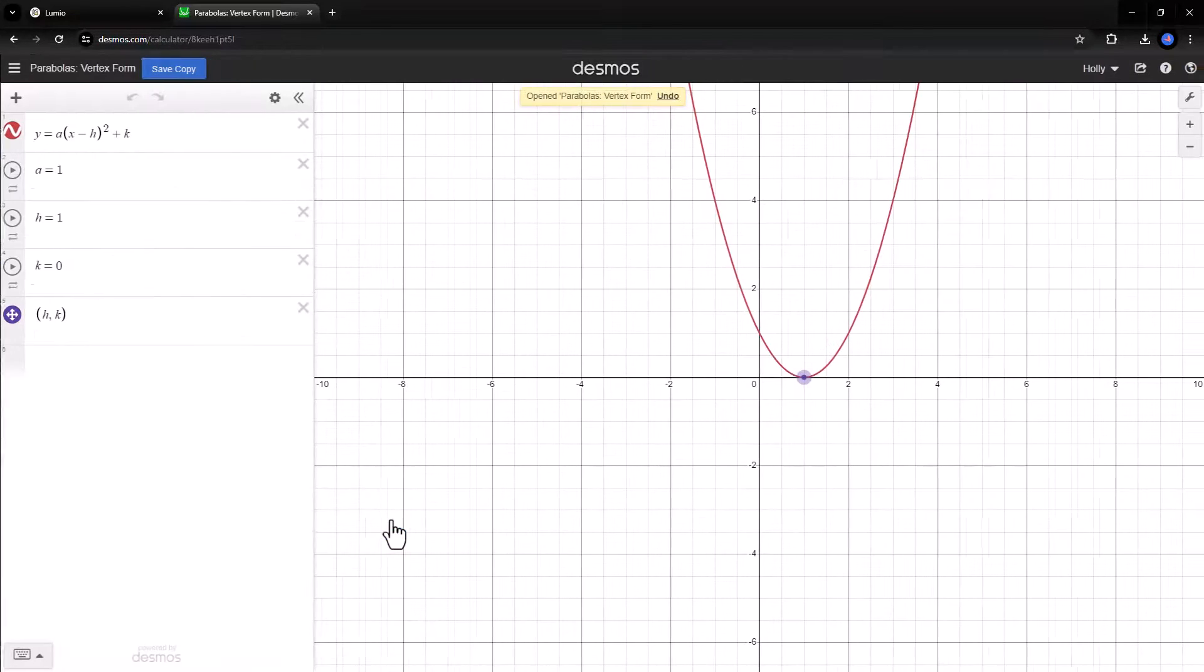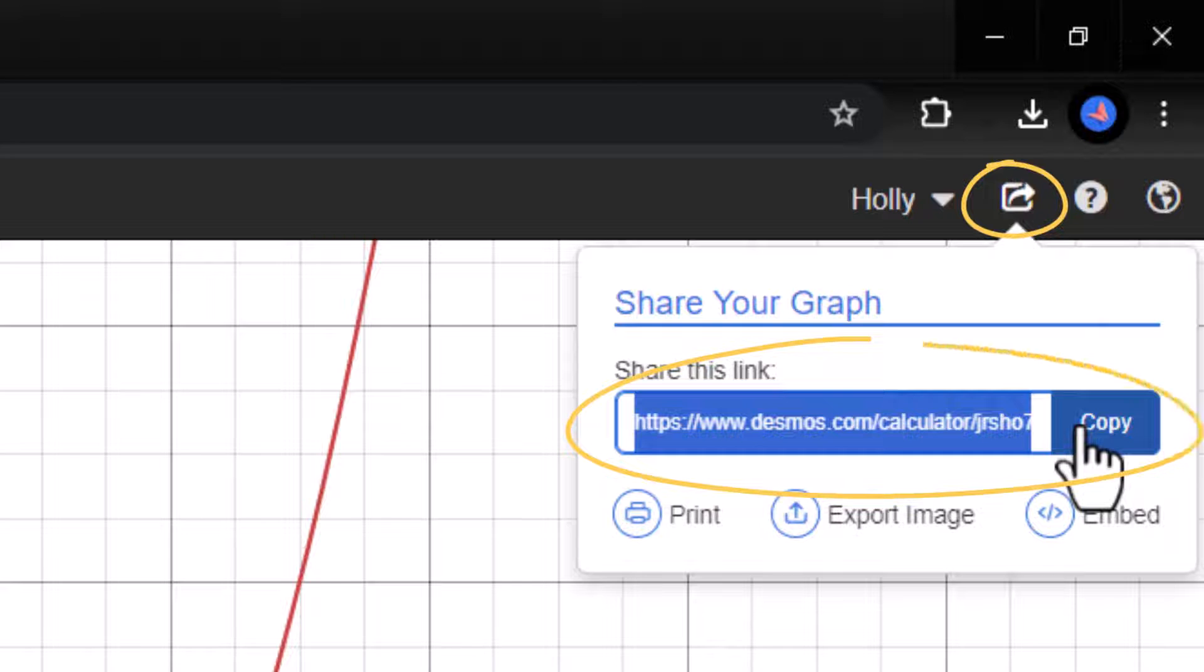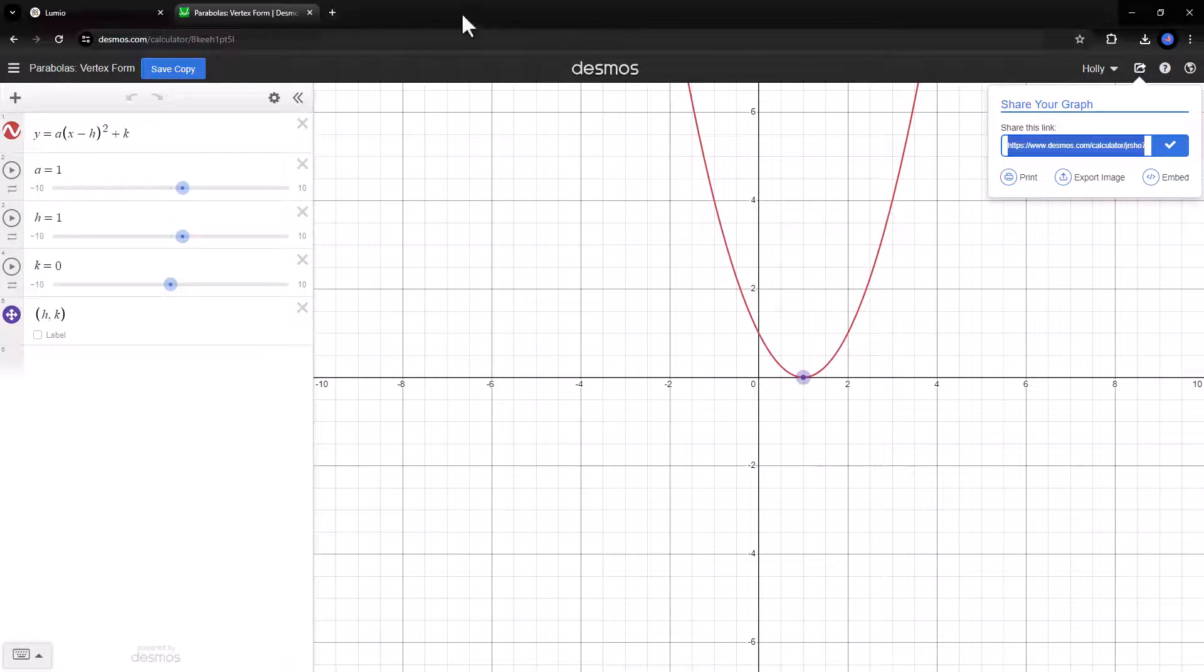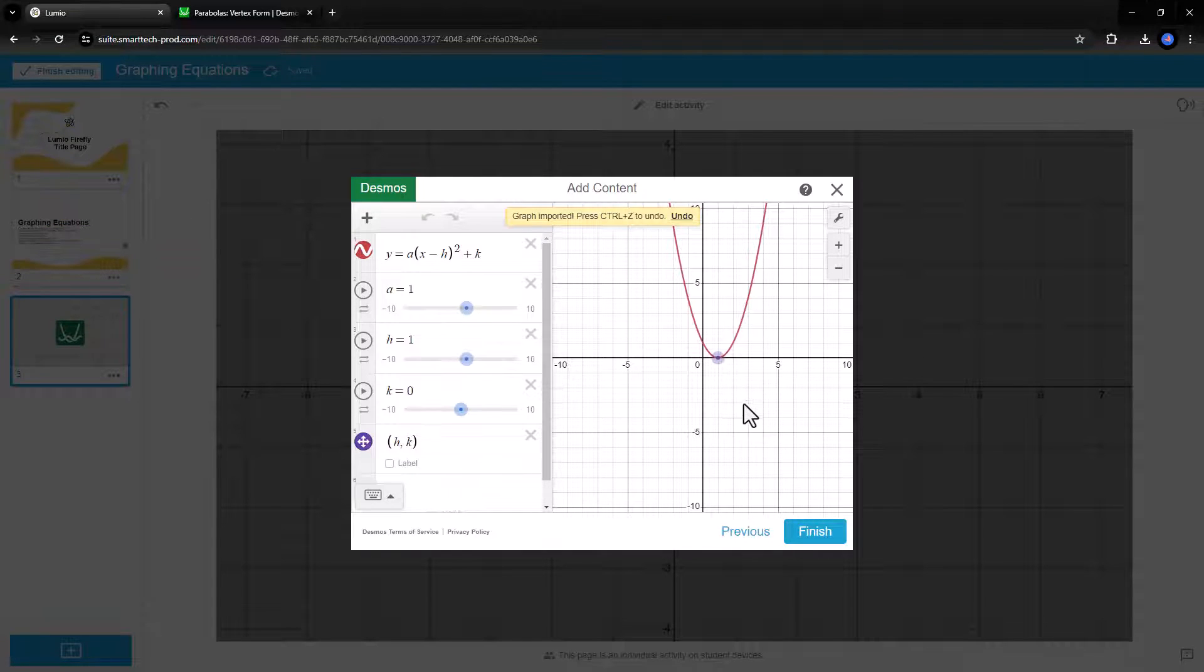On the Desmos graphing calculator website, open the graph you'd like to import to Lumio. Click the share button in the upper right-hand corner and copy the share link. In Lumio, paste this share link into a new line in the Desmos page. The graph will be imported into your Desmos page in Lumio.